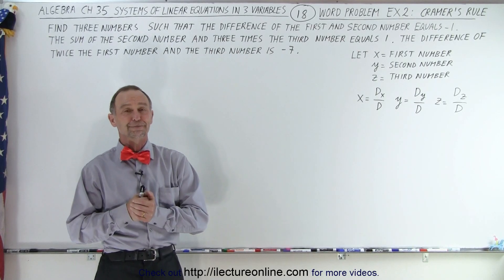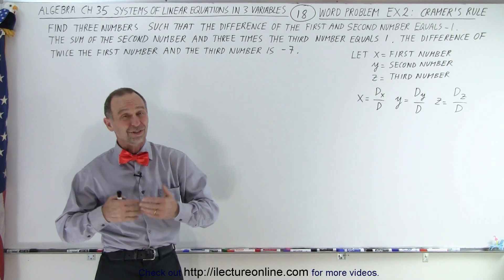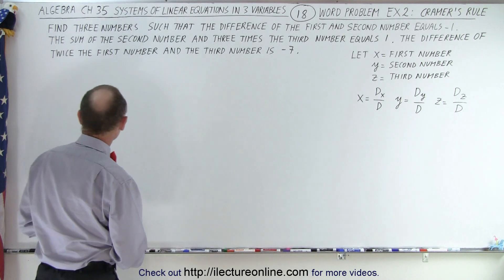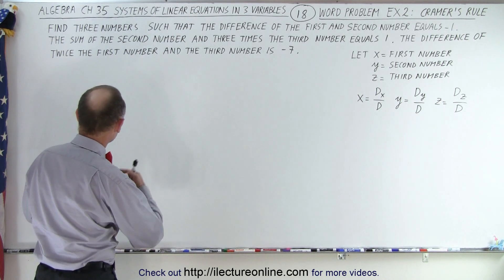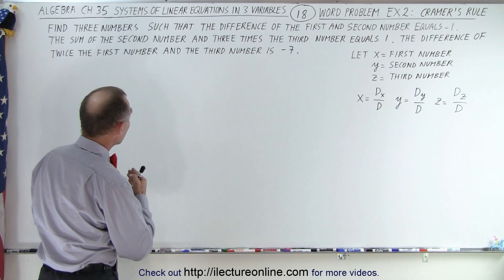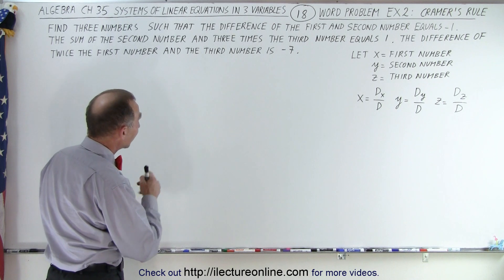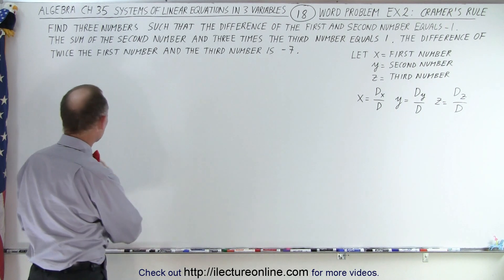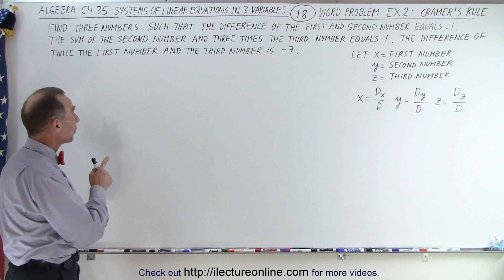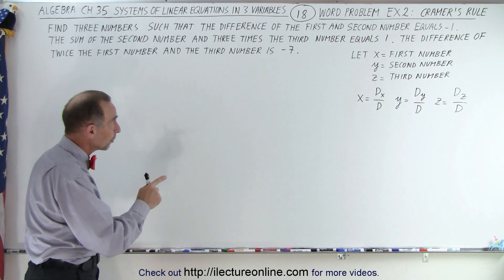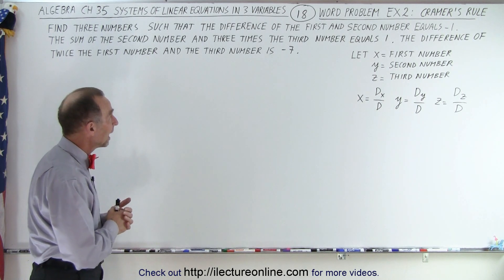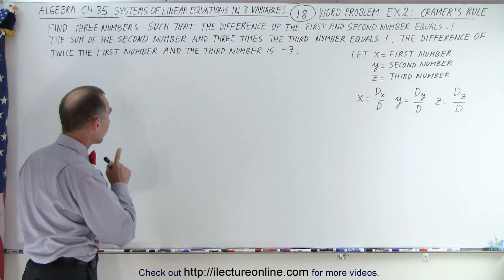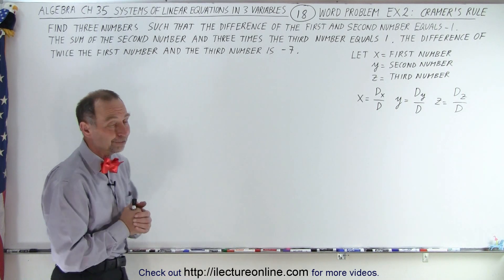Welcome to What Lecter Online. Here's our second word problem. We have three numbers to find: the difference of the first and second number equals negative 1, the sum of the second number and three times the third number equals positive 1, and the difference of twice the first number and the third number equals negative 7.